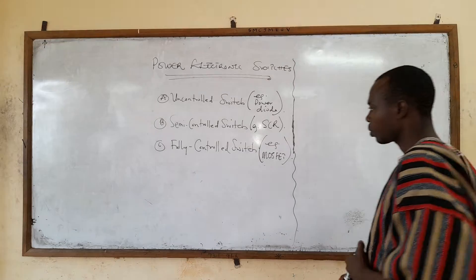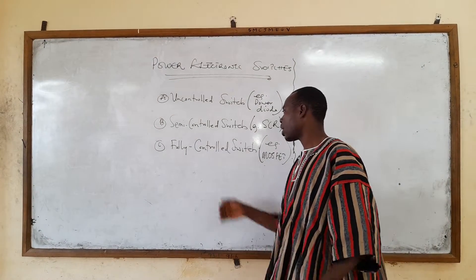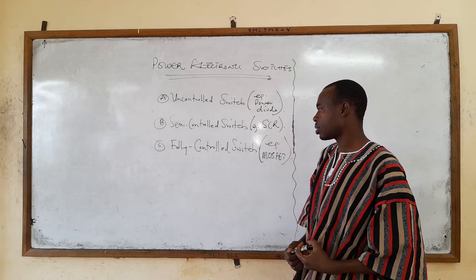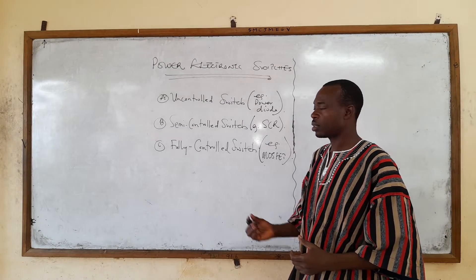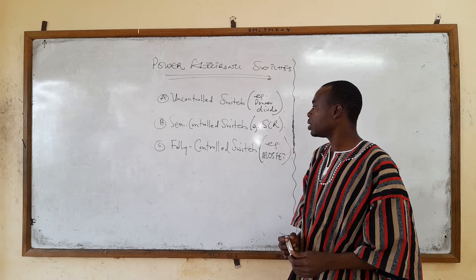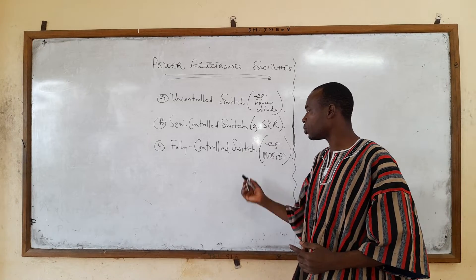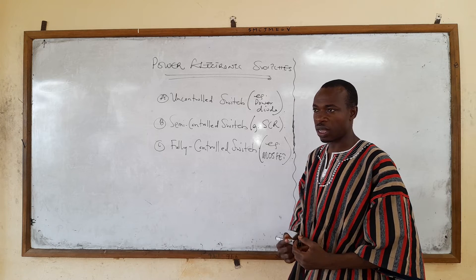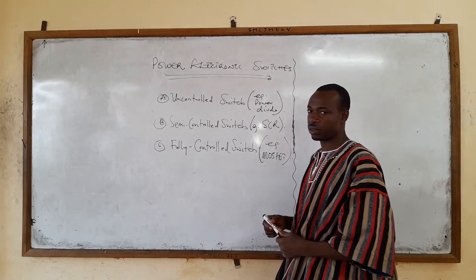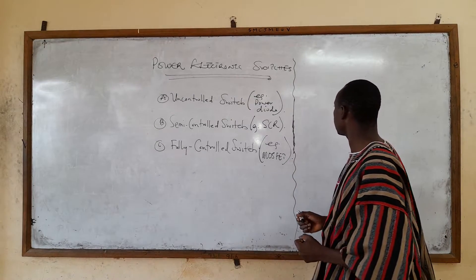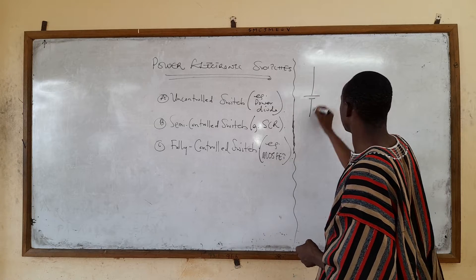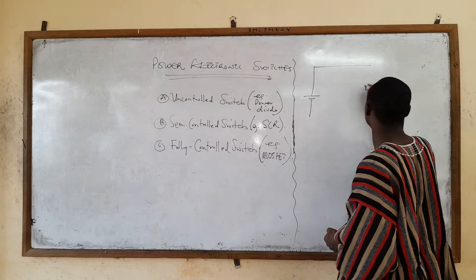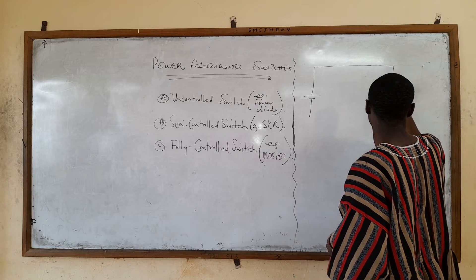Now let's continue with the last type of power electronic switch — the fully controlled switch. From the name, we can easily deduce that fully controlled means we can control both the turn-on as well as the turn-off. An example is a MOSFET. Let's see a simple circuit which implements this MOSFET and how we are going to achieve our turn-on.